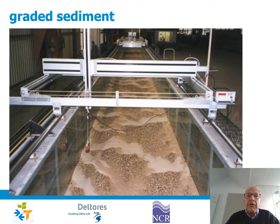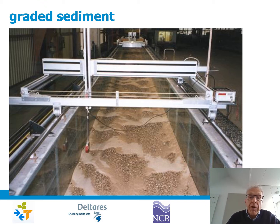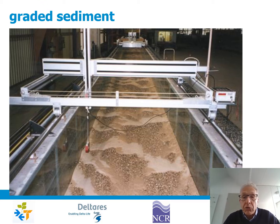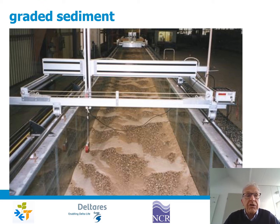We can also see it in the laboratory. For instance, in a laboratory experiment in a flume carried out by Astrid Blom, a homogeneous mixture of sand and gravel was exposed to flow, and after some time dunes were formed, and the coarser material accumulated in the deeper parts — in the troughs. The result was a layer of gravel, of coarse sediment, on top of which dunes traveled — dunes that consisted of pure sand.